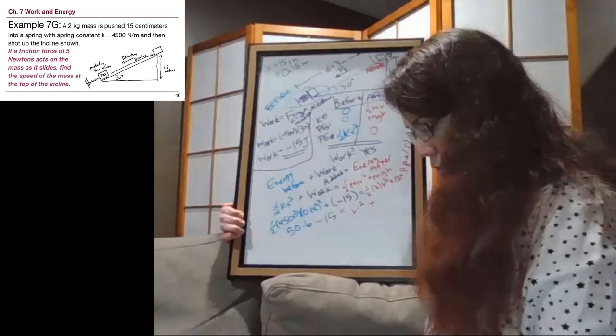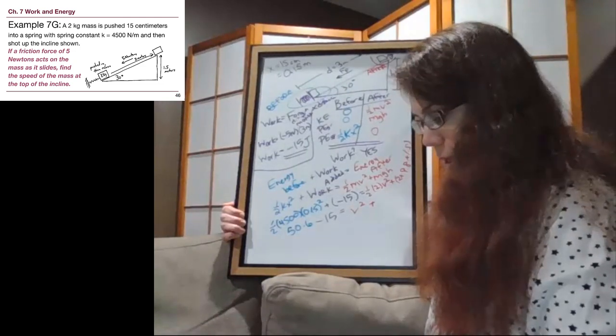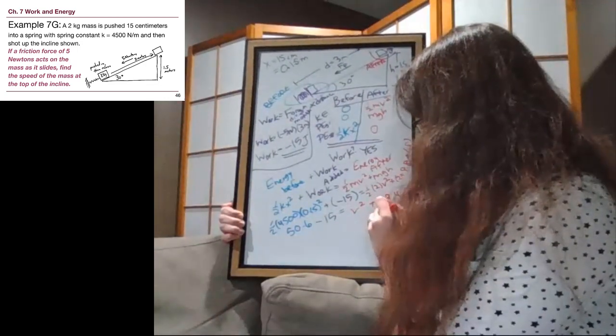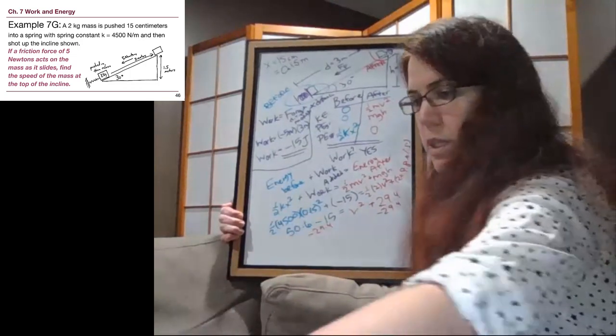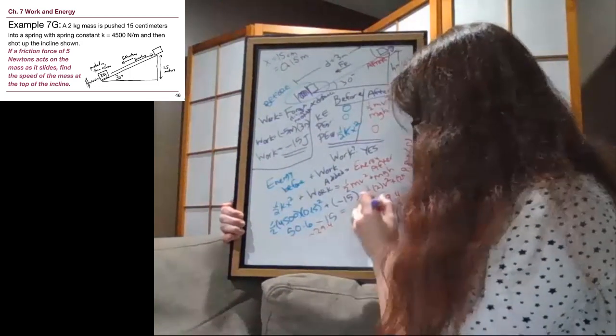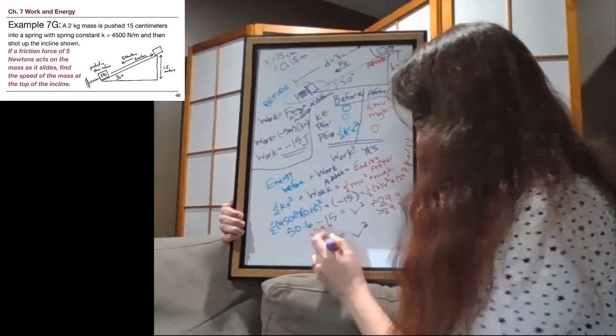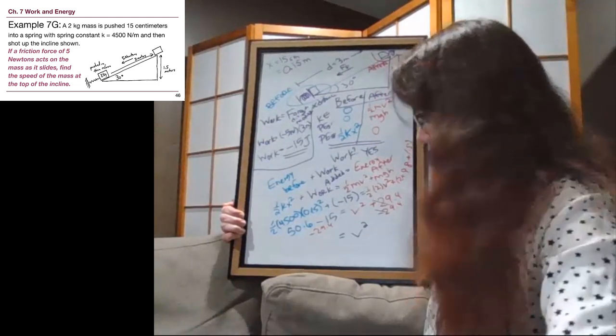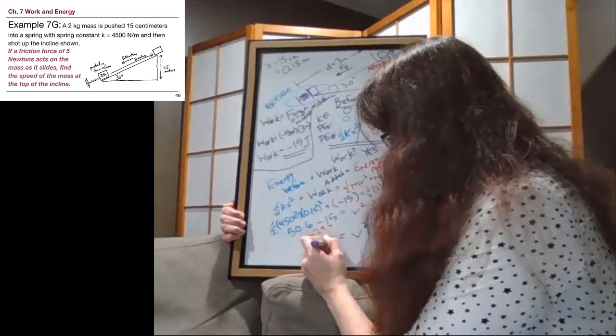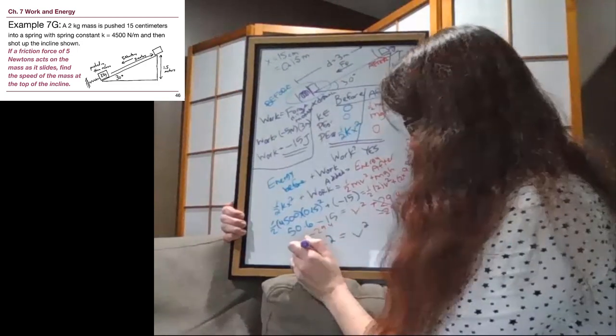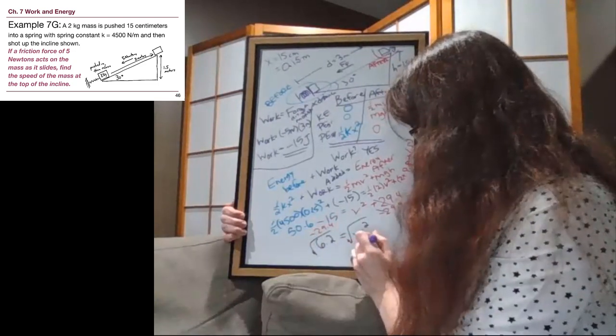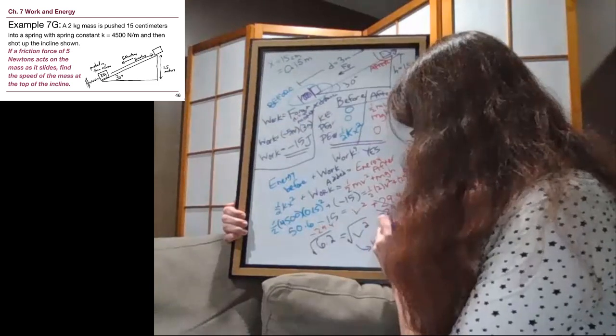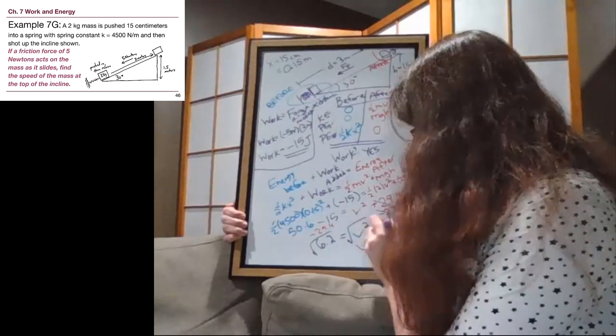So we'll subtract that from both sides, minus 29.4, minus 29.4. On the right side we just have v squared. On the left side we have 50.6 minus 15 and also minus 29.4, so we get 6.2. Remember we are not yet finished, we have to make sure not to forget these squared terms, we have to take the square root of both sides to get that v. The square root of 6.2 is 2.49 or 2.5 meters per second. So that's how fast the block is still able to be moving at the top of the ramp.